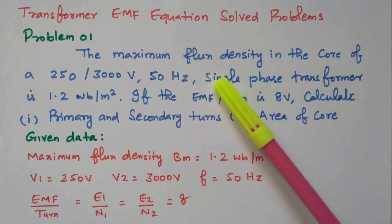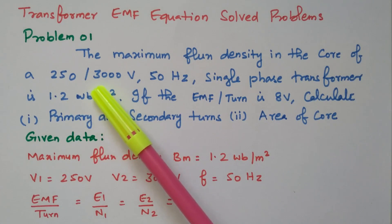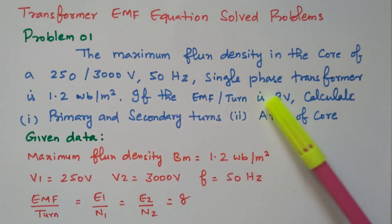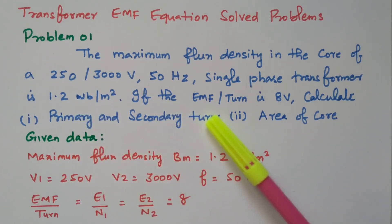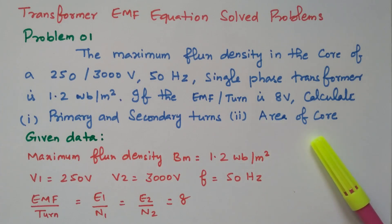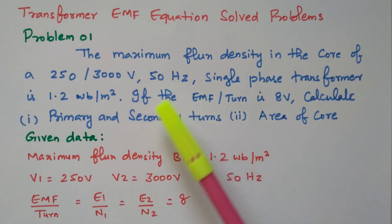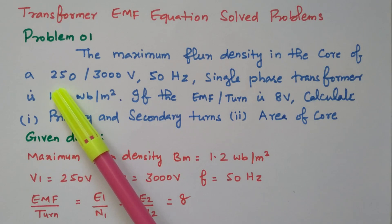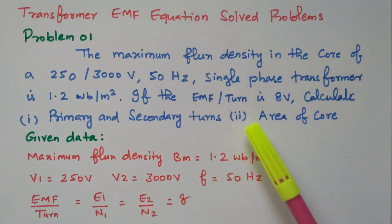Problem 1: The maximum flux density in the core of a 250V/3000V, 50 Hz, single phase transformer is 1.2 Weber per meter square. If the EMF per turn is 8 volts, calculate the primary and secondary turns and area of the core. The frequency is 50 Hz, primary voltage is 250V, secondary voltage is 3000V, flux density is 1.2 Wb/m², and EMF per turn is 8V.